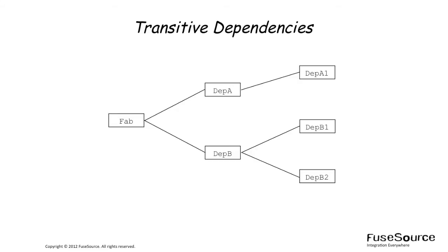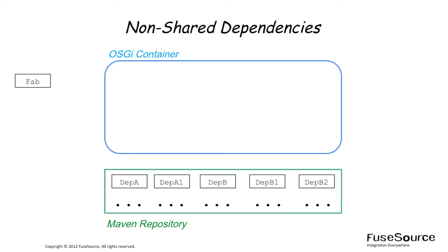After working out the tree of dependencies, the FAB is converted into an OSGI bundle and deployed into the OSGI container. There are a couple of different ways this FAB-to-bundle conversion can be performed. The first option is the case of non-shared dependencies, where all of the dependencies are embedded inside the FAB's bundle and are thus not shared with other OSGI bundles in the container. In effect, this deployment option is very like a WebArchive (WAR) deployment.